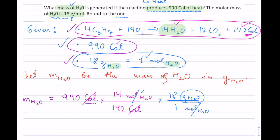That cancels and now notice you used all your givens and you're left with the unit of grams of H2O, which is what you wanted. Now we can take out our calculator.